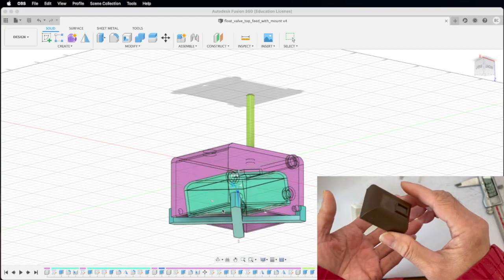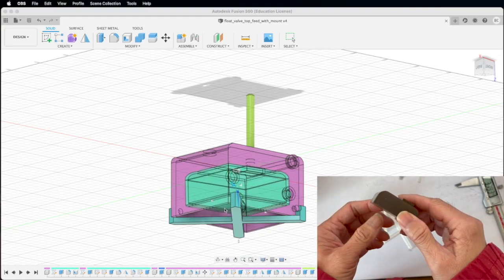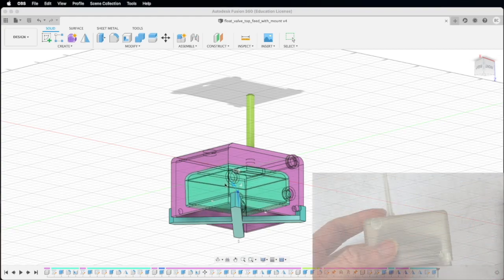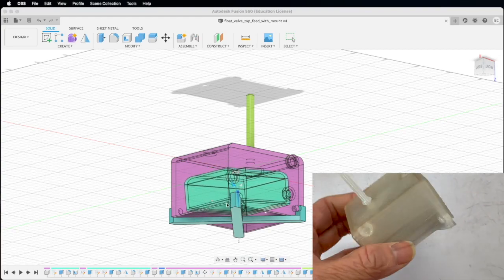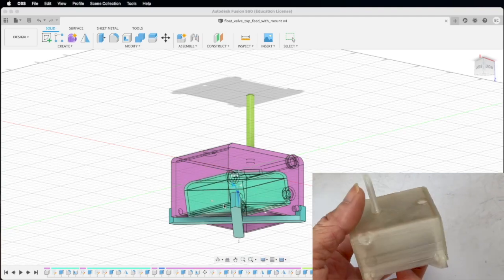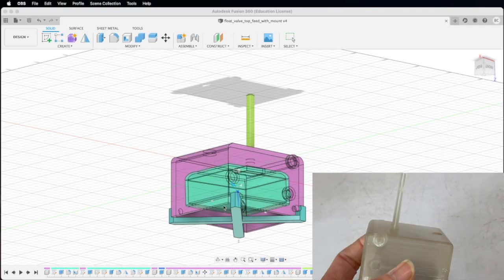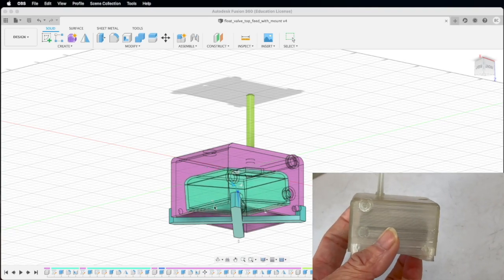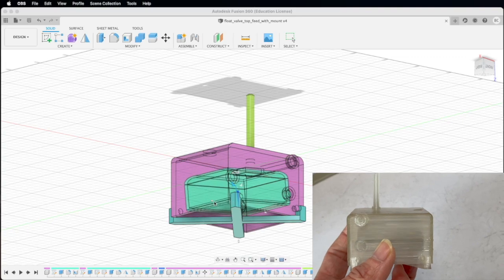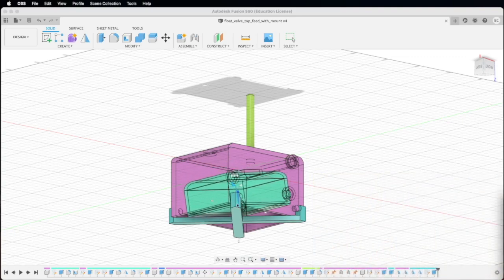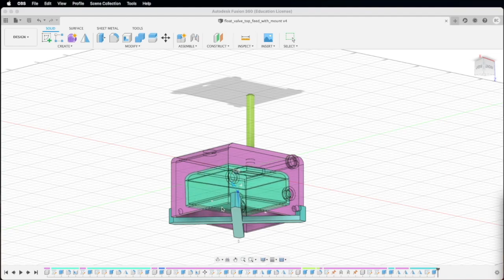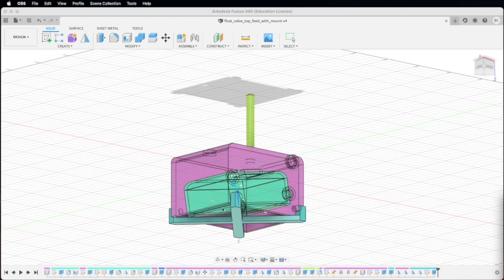That means it can fix the problem of water getting inside the floating bed of the float valve and reduce the buoyancy of the float valve and hence make the float valve malfunction. So now with this all covered vacuum floating piece, the buoyancy of the float valve will be the same whether it's flooded or whether you tip it to the side because there's always air inside the float valve.